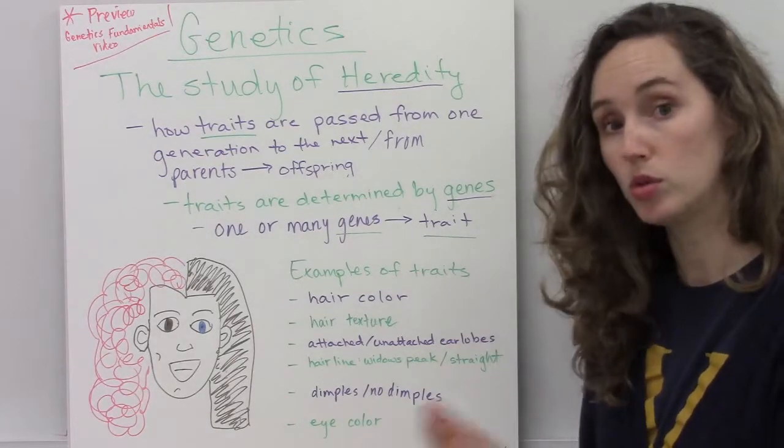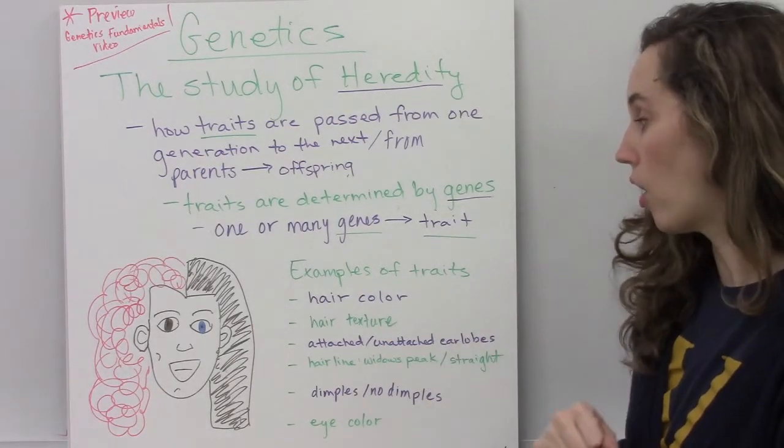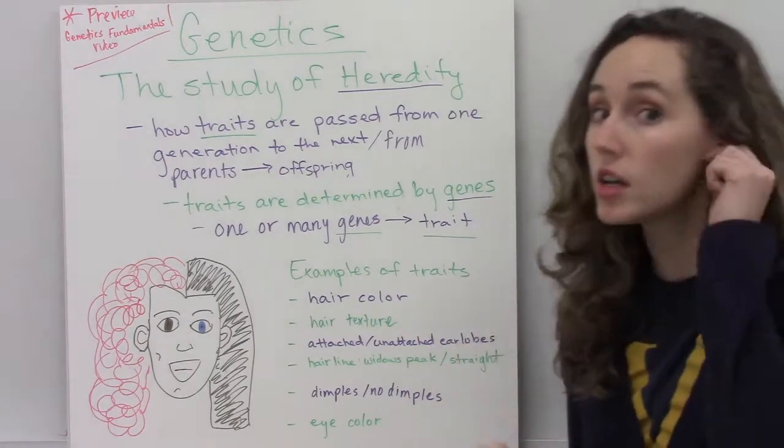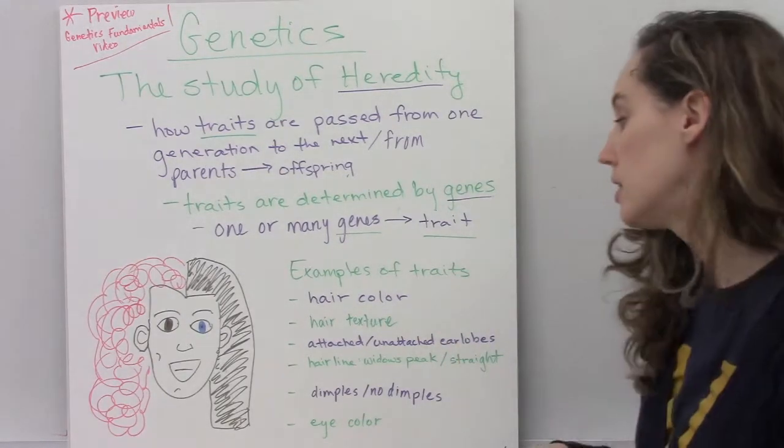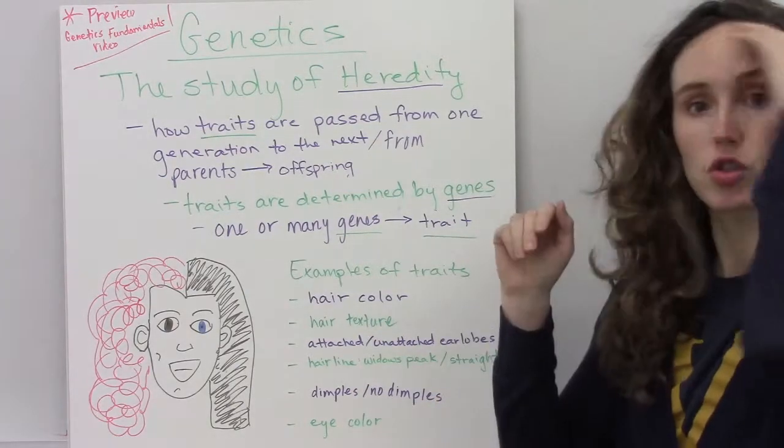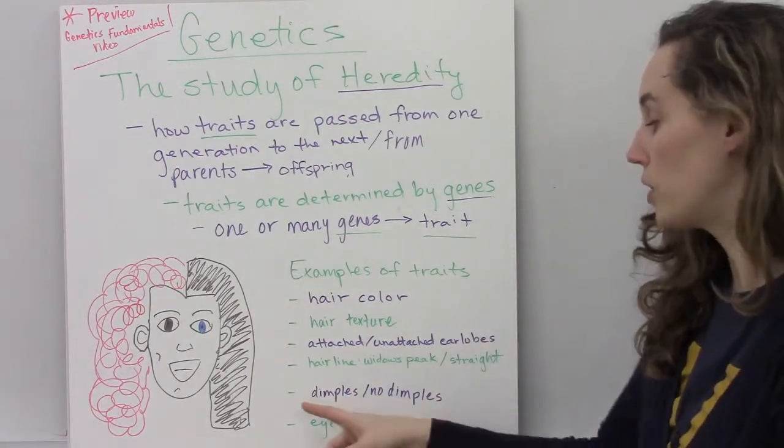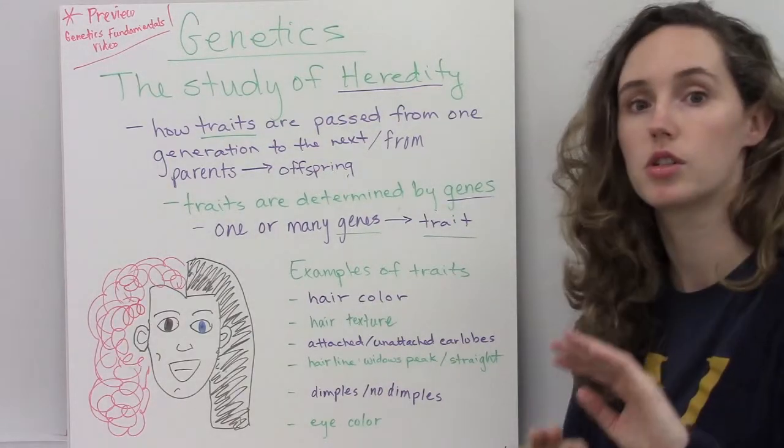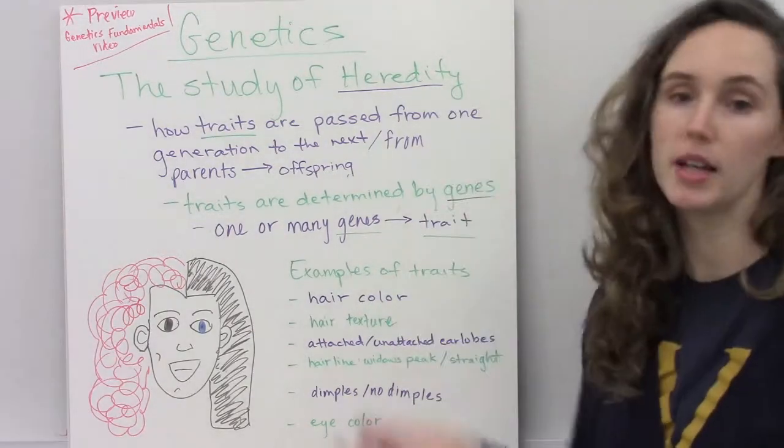Some examples of traits are hair color, hair texture, whether your earlobes are attached or not, your hairline, whether you have a widow's peak or it's straight, whether you have dimples or not, and also your eye color. Those are just a few, from here up, examples of traits.